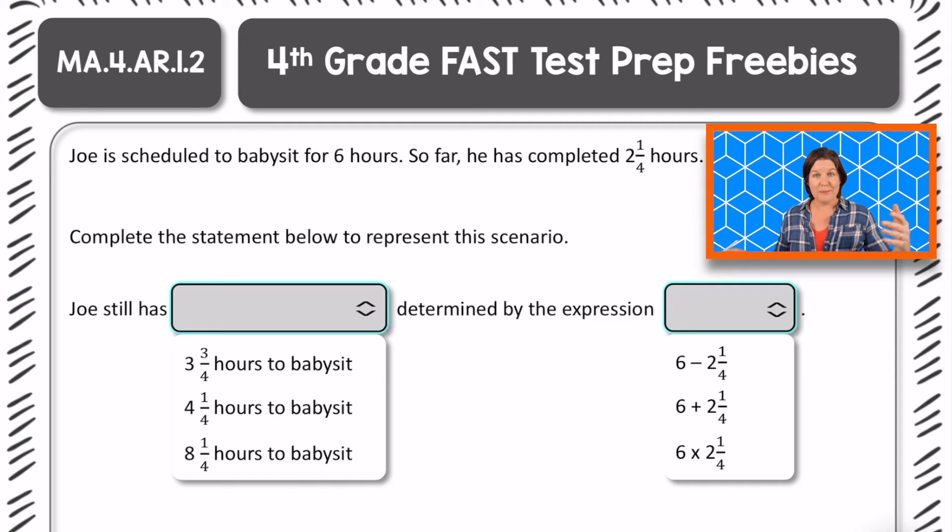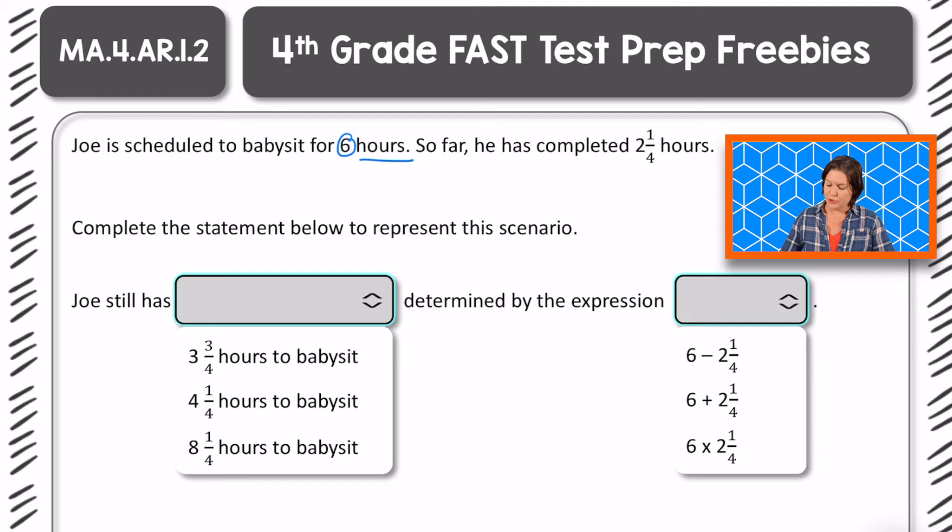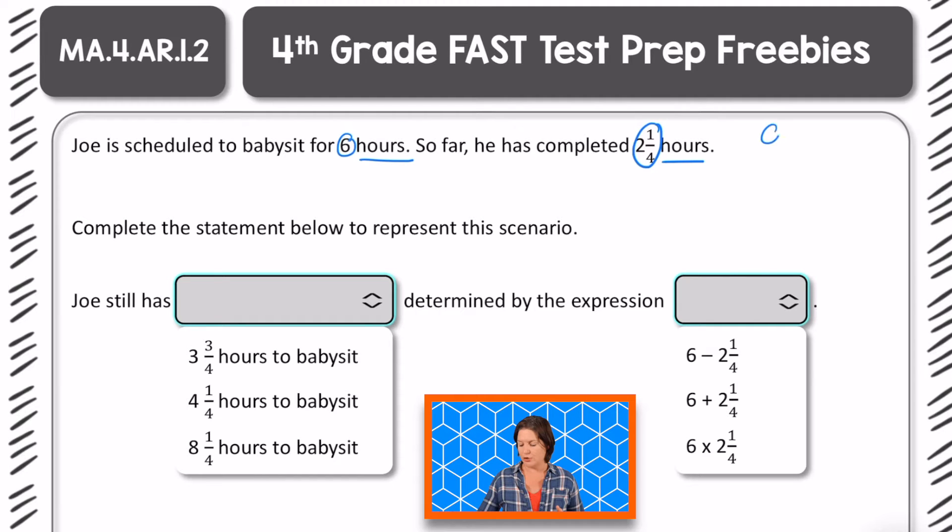Fourth grade, welcome back, so let's go over this. It says that Joe is scheduled to babysit for six hours. So far he has completed two and one-fourth hours. Complete the statement below to represent the scenario. So we've got somebody named Joe who is scheduled to babysit for six hours total, and so far he's completed two and one-quarter or two and one-fourth.